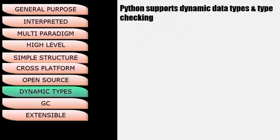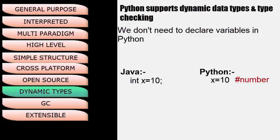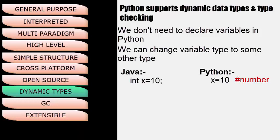Python supports dynamic data types and dynamic type checking. We don't need to declare a variable as we do in other languages. For example, in Java we say 'int x = 10'. In Python, we simply say 'x = 10' and Python takes care of its data type, understanding that 10 is a number so x automatically becomes a number type. In a program, we can even change these values to other types — for example, 'x = "mamtha"' makes x become a string type.